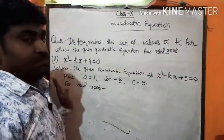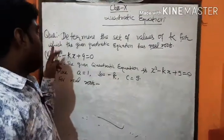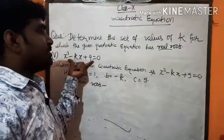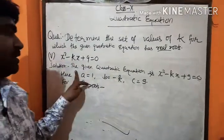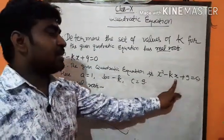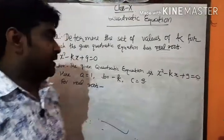Question number 5. Find the values of k for which the given quadratic equation has real roots. The given quadratic equation is x squared minus kx plus 9 equal to 0.